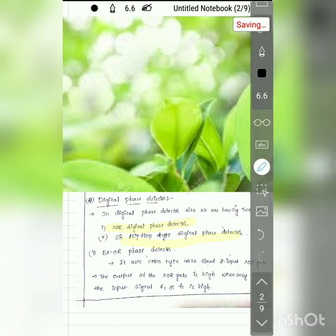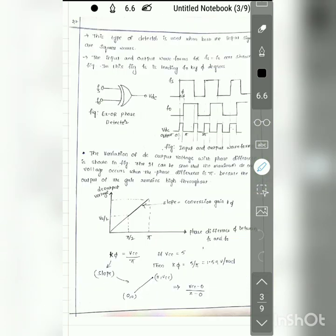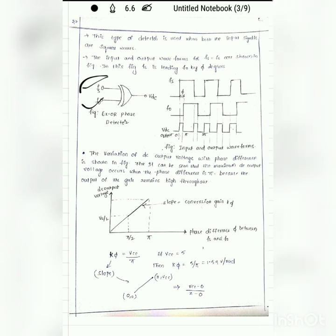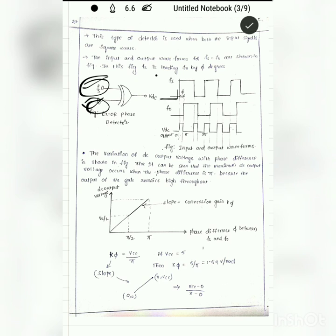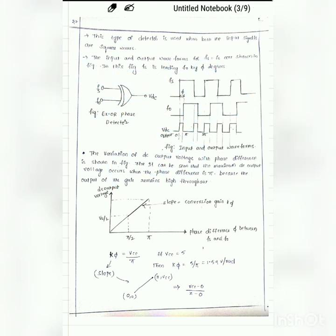Let us understand the operation with the help of waveforms. The exclusive-OR gate has two inputs: FS, the incoming input signal, and F0, the signal coming from the VCO. Taking a phase difference of π between FS and F0, the exclusive-OR gate output is high only when there is a difference between FS and F0; otherwise the output will be low.